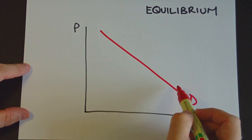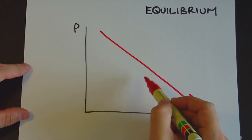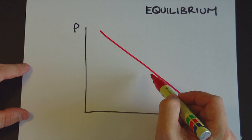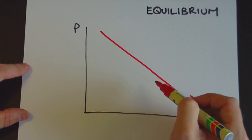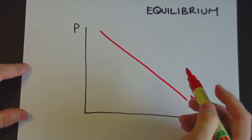So as the price drops, individuals can afford to buy more of the good or the service and also new people enter the market as well who are suddenly able to afford it. So that's why it's downward sloping.